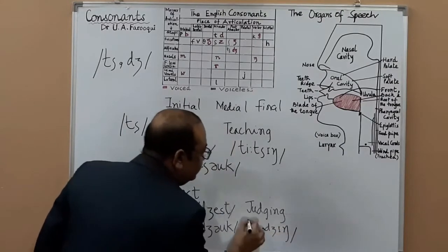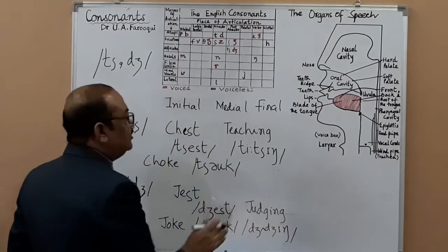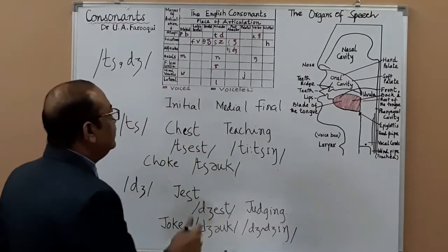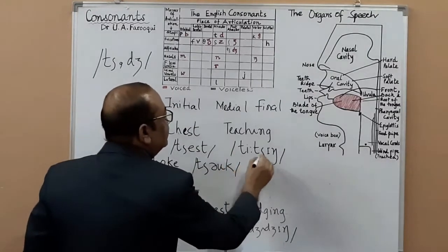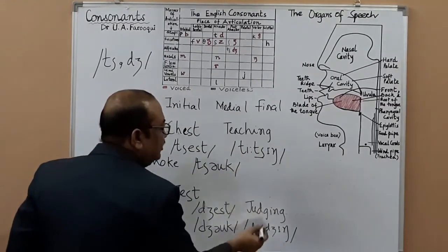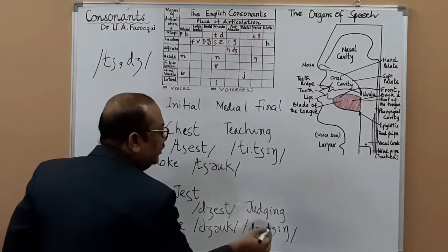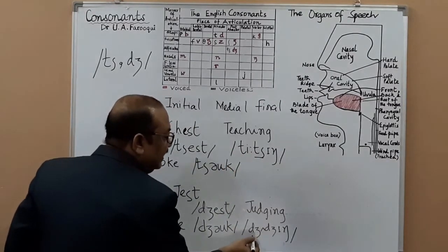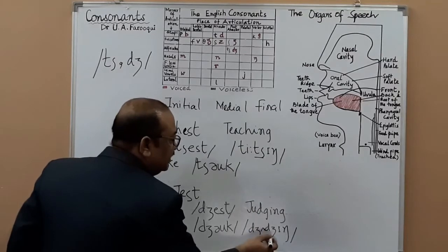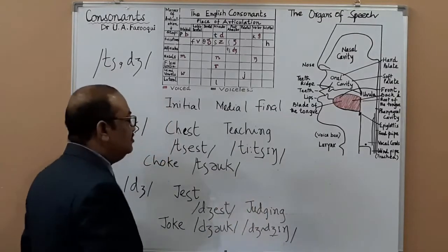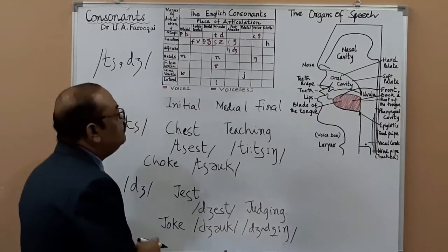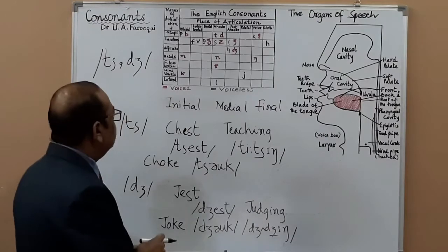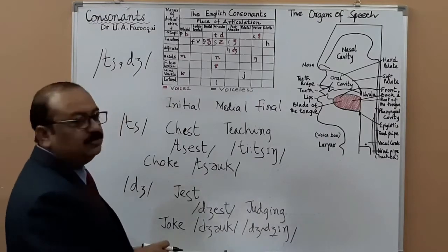So in 'judging' you have the initial as well as medial occurrence of the J sound, and in 'teaching' you have the medial occurrence of the CH sound. Now we come to the final position.